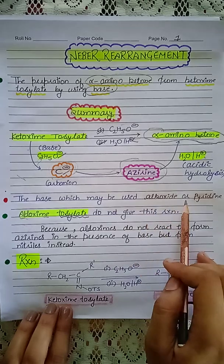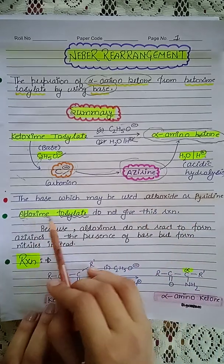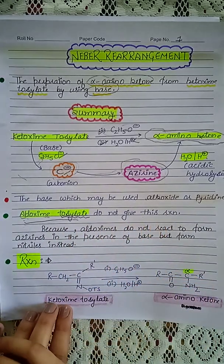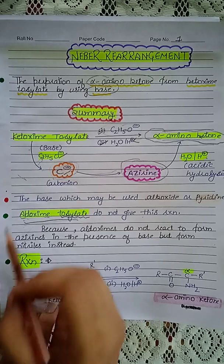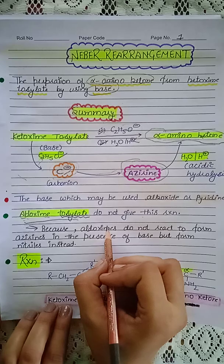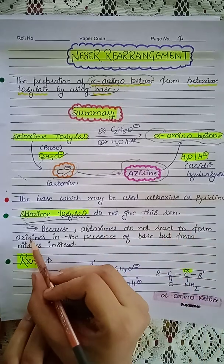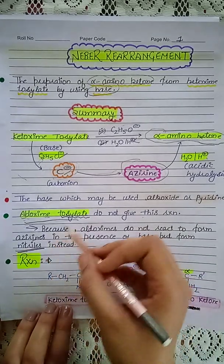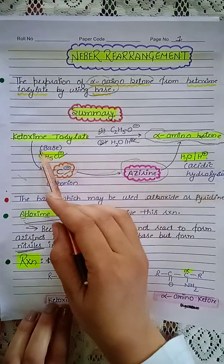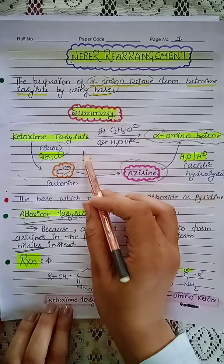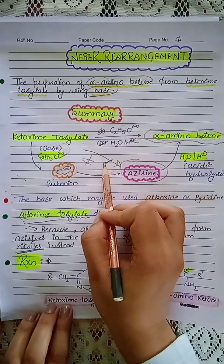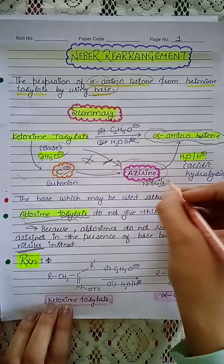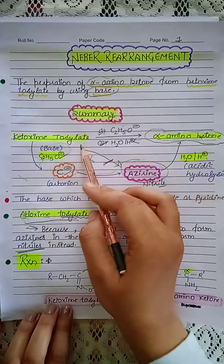You should remember these key points of this reaction. The base which may be used is alkoxide or pyridine, and aldoxime tosylate does not give this reaction. The reason is that aldoximes do not react to form azirines in the presence of base, but instead form nitriles. So we cannot use aldoxime here for this rearrangement.